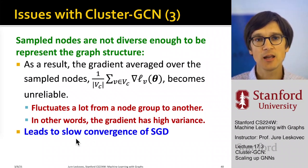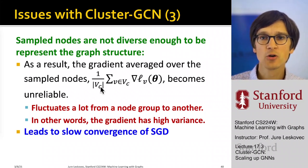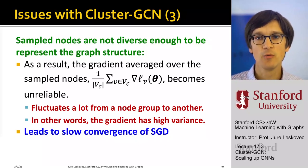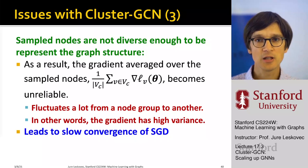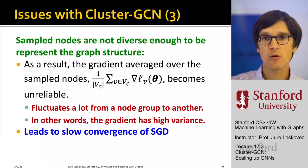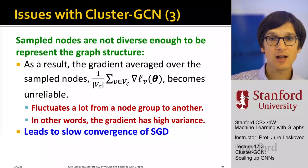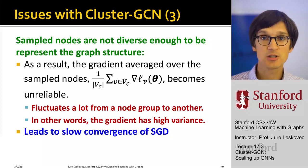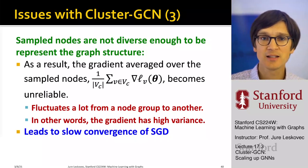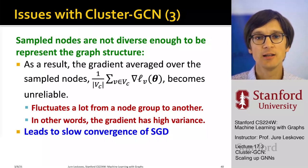This means that when we compute the gradient and loss, it will fluctuate a lot from one node group to another. For example, you first compute gradients over a cluster of computer scientists, then over music students who are very different, then over mathematicians who are different from both. The gradients fluctuate quite a lot and training is quite unstable, which in practice leads to slow convergence of stochastic gradient descent.